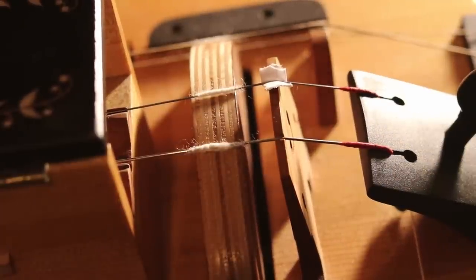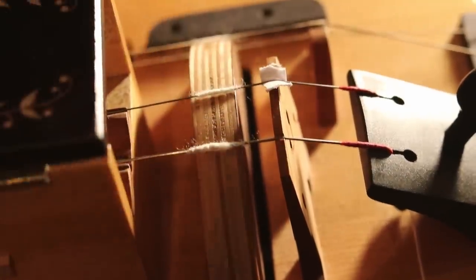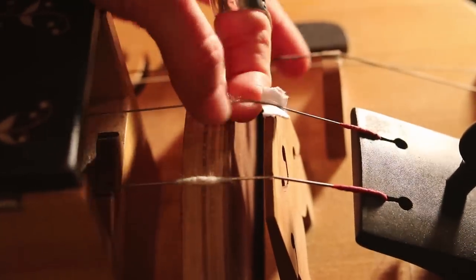There are three options. One, you can have a plain and simple bridge with no regulation. Then if you wish to change the pressure of the melody string, you get familiar with these little pieces of paper that you place over here. Loosen the string, put the paper in place and tighten the string again.